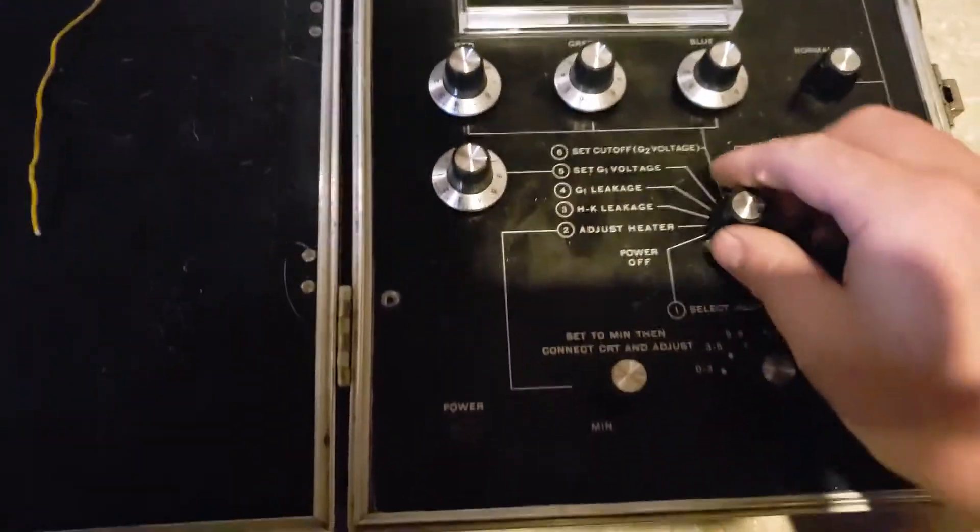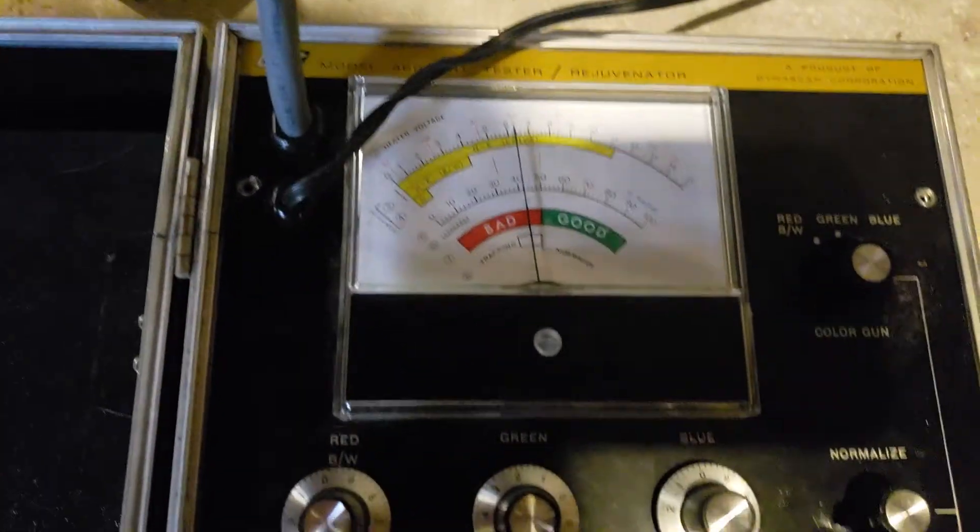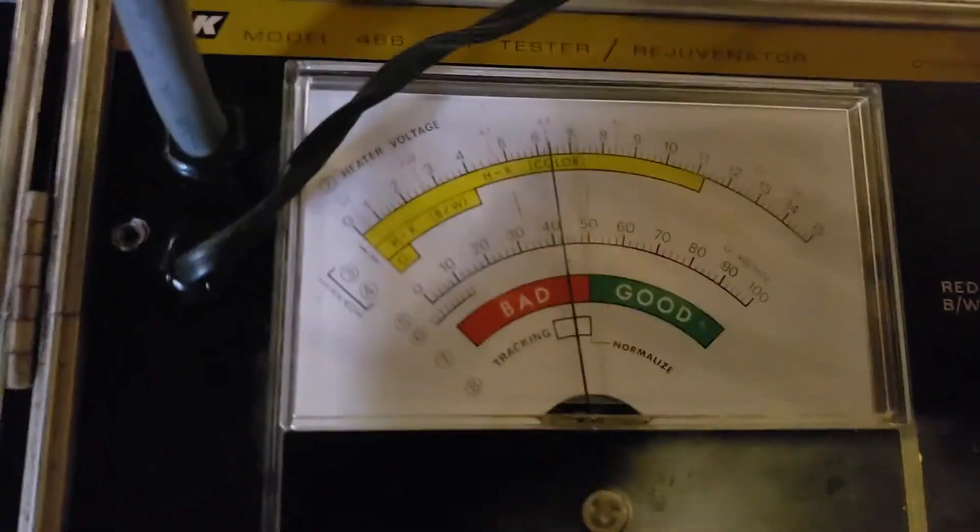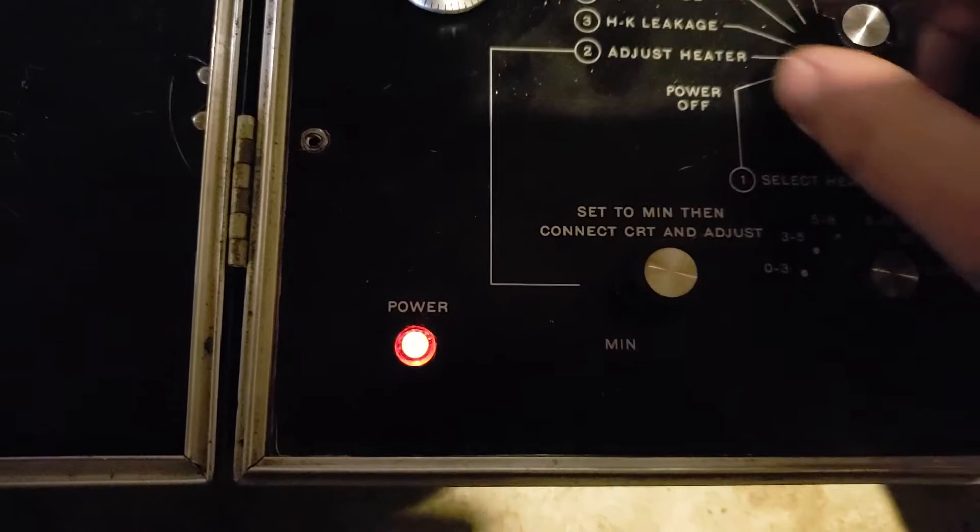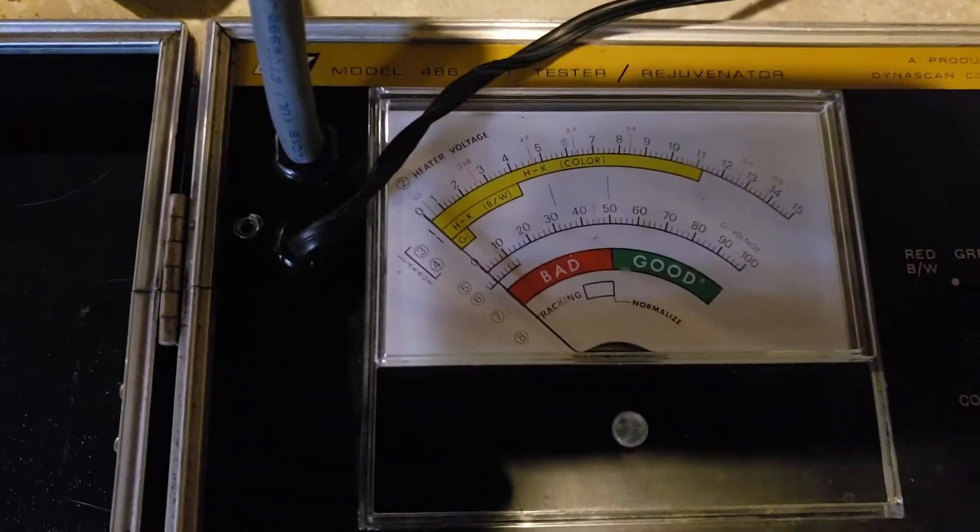We're gonna turn it on and start off. Adjust heater - I know that the heater voltage on this is 6.3, looks like we're good. We're gonna do a leakage test, looks like I have no leakage.